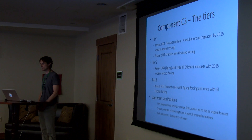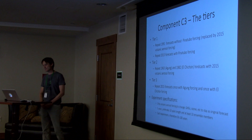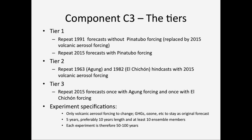We're only thinking about changing the volcanic aerosols; greenhouse gases, ozone, and other external forcings would be kept the same. Preferably 10-year hindcasts — particularly to capture the AMOC response, you want at least 10 years, maybe longer, though 5 years could work for some other impacts. At least 10 ensemble members are needed given the lot of noise in the response, particularly the Northern Hemisphere winter response. Each experiment therefore amounts to about 50 to 100 years of integration.